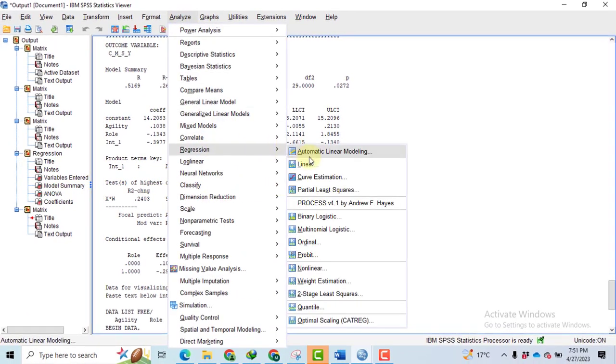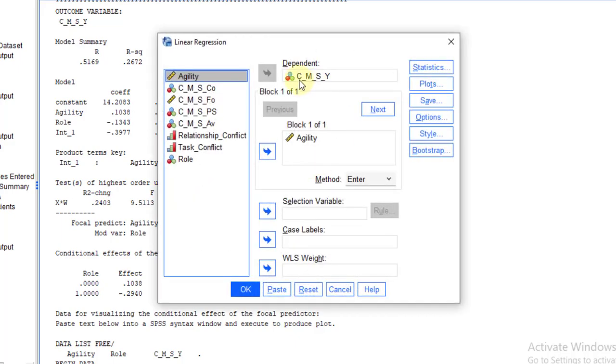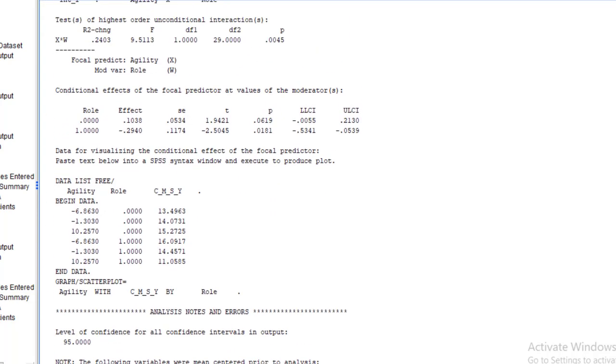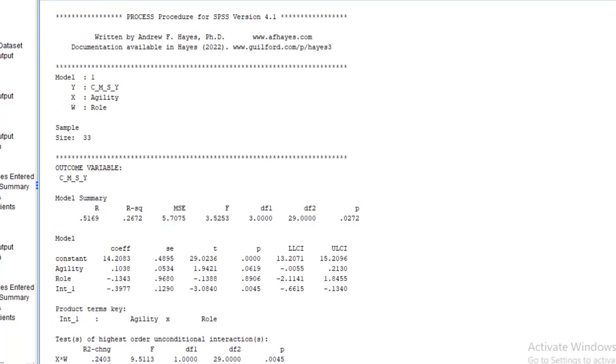Let's check how much variation has been explained in the CMSY by the agility only. So go to Analyze, Regression, Linear, select CMSY as dependent variable and agility as independent variable. Click OK. And we got that 9.7% variation is explained only by the agility. So it means that role is explaining a good amount of variation in the dependent variable.